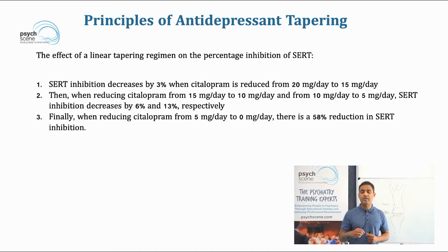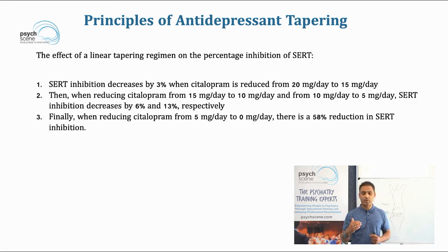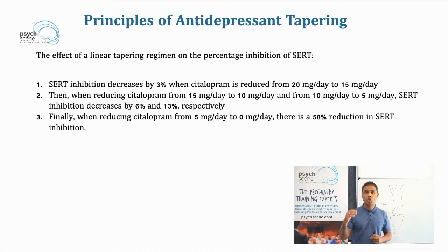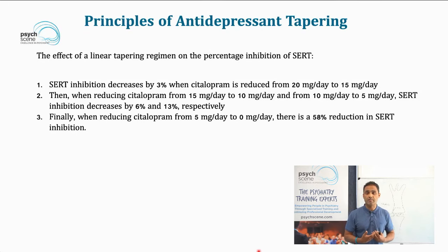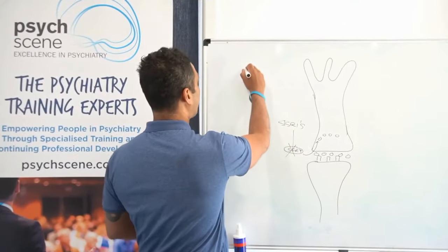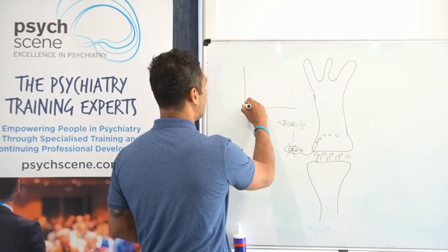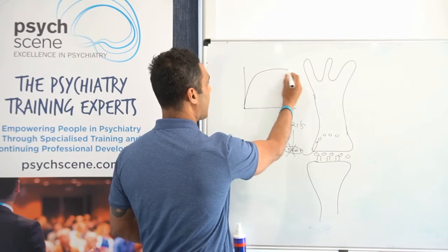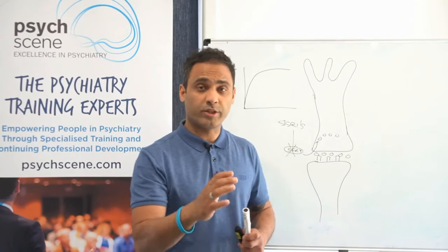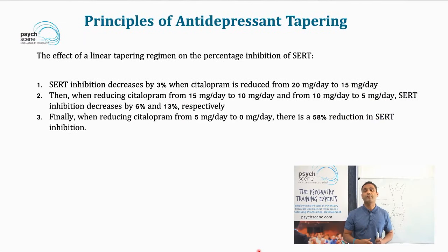Reducing further from 15 mg to 10 mg and from 10 mg to 5 mg, SERT inhibition decreases by 6% and 13% respectively. So the drop from 20 mg down to 5 mg is not that significant in terms of SERT inhibition. But the biggest drop comes when citalopram is reduced from 5 mg to 0, where SERT inhibition drops by almost 58%. This is reflective of the hyperbolic dose-response curve, where the effect reaches a plateau.